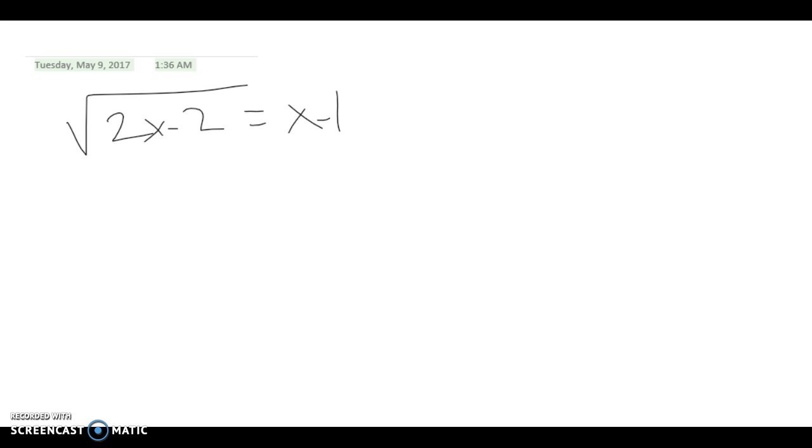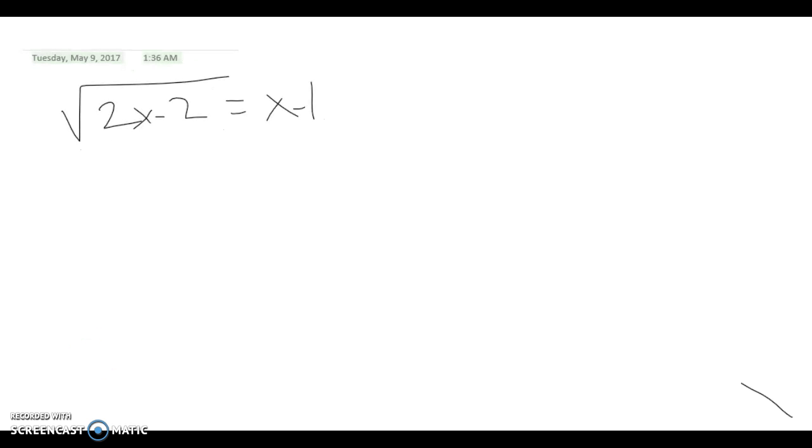Since the radical is already isolated, we'll go ahead and square both sides. 2x minus 2 squared equals x minus 1 squared. When a square root is squared, it just comes out to be whatever is inside of the square root.